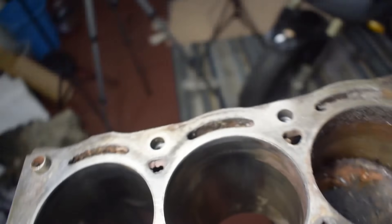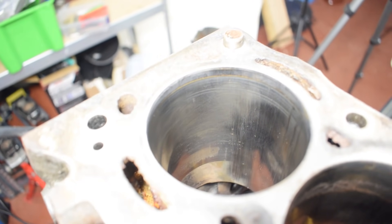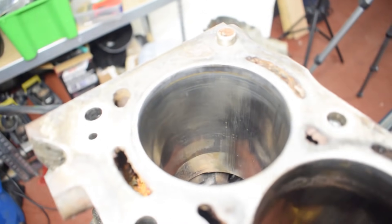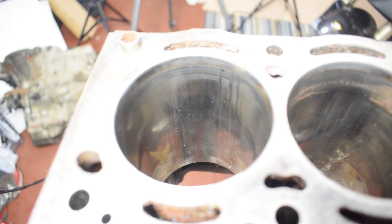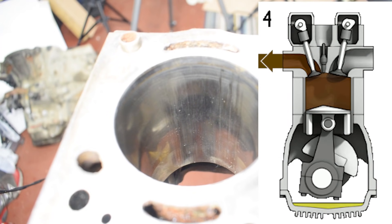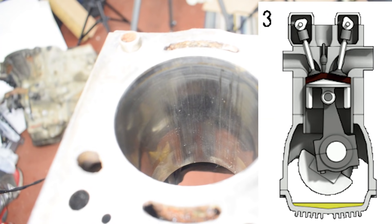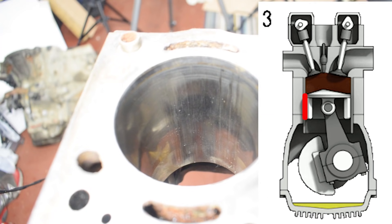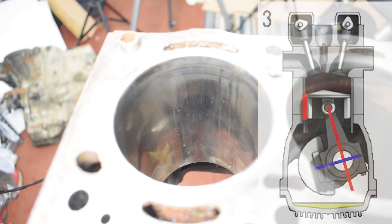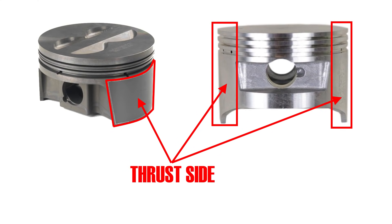On the other hand cylinder one doesn't really have serious rust and there's even some honing marks present. However there is increased wear on the thrust axis of the bore. Now increased wear on the thrust axis is normal and expected. During engine operation combustion forces act on the piston crown and because of the piston's position in relation to the conrod and the crankshaft this part of the bore receives most of the load and therefore most of the wear.